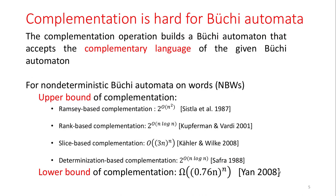The complementation operation constructs a Büchi Automaton that accepts the complementary language of the given Büchi Automaton. Currently, there are four types of complementation algorithms: Ramsey-based, rank-based, slice-based, and determinization-based complementation. They all lead to superexponential blowup in the number of states, and this cannot be avoided because the lower bound is also superexponential.